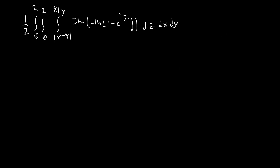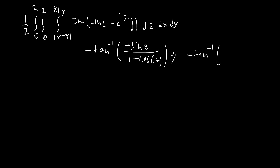So negative natural log of 1 minus e^{iz} — this is something super similar to stuff we've seen in the past. We're essentially going to be converting this into tan inverse of cot of something. Remember that the imaginary part of a natural logarithm usually becomes an arc tangent term. We're going to end up with negative arctan of the imaginary part over the real part, which is negative sine z over 1 minus cosine z. Using trig identities, this is the same as positive arctan of cot of z/2. I'll put a card for one of my previous videos where I showed this result.